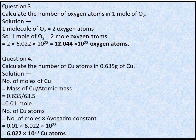Q3: Calculate the number of oxygen atoms in 1 mole of oxygen (O₂). 1 molecule of O₂ = 2 oxygen atoms. So 1 mole of O₂ = 2 moles of oxygen atoms = 2 × 6.022 × 10²³ = 12.044 × 10²³ oxygen atoms.